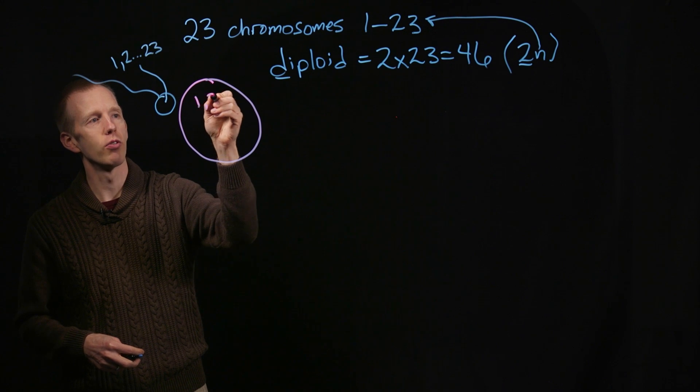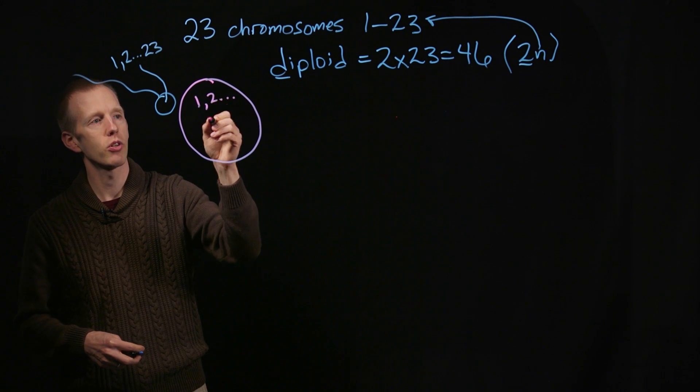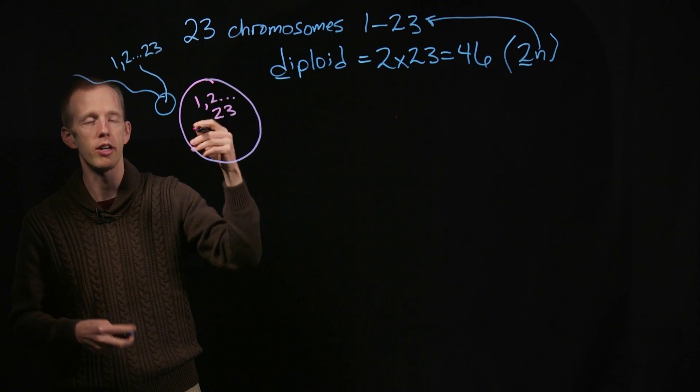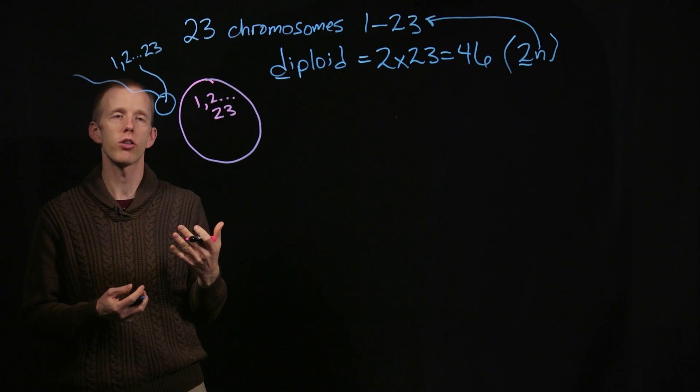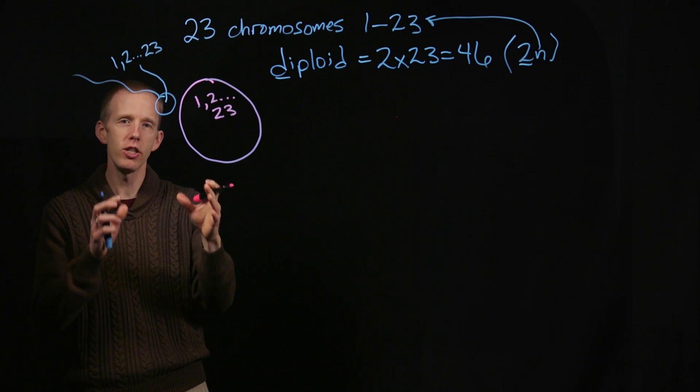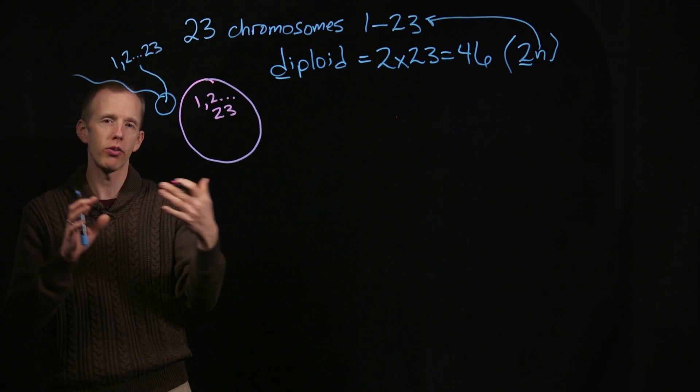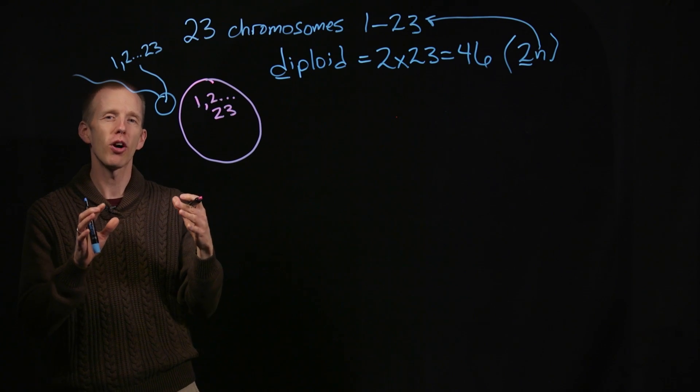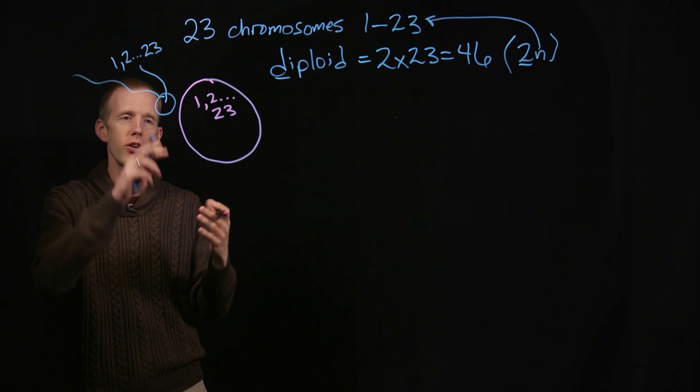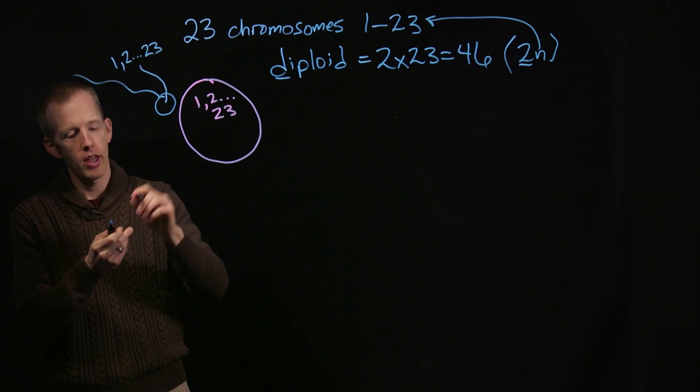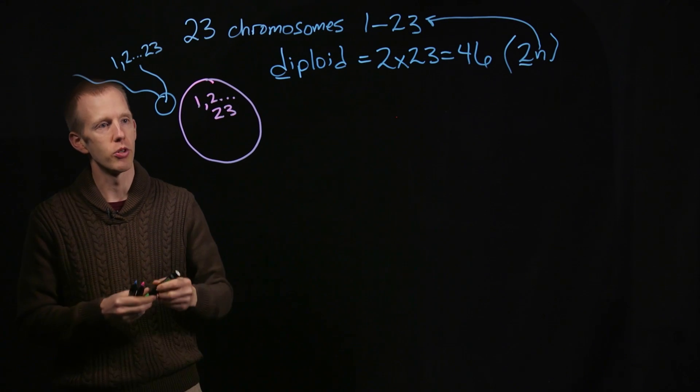And the same thing was true inside the oocyte, or the egg. The egg carried a single version of each of those chromosomes, 1, 2, 3, and 4, etc., up to 23. That way, each of us has an equal amount, almost anyway, of contribution of genetic material from our fathers and from our mothers.